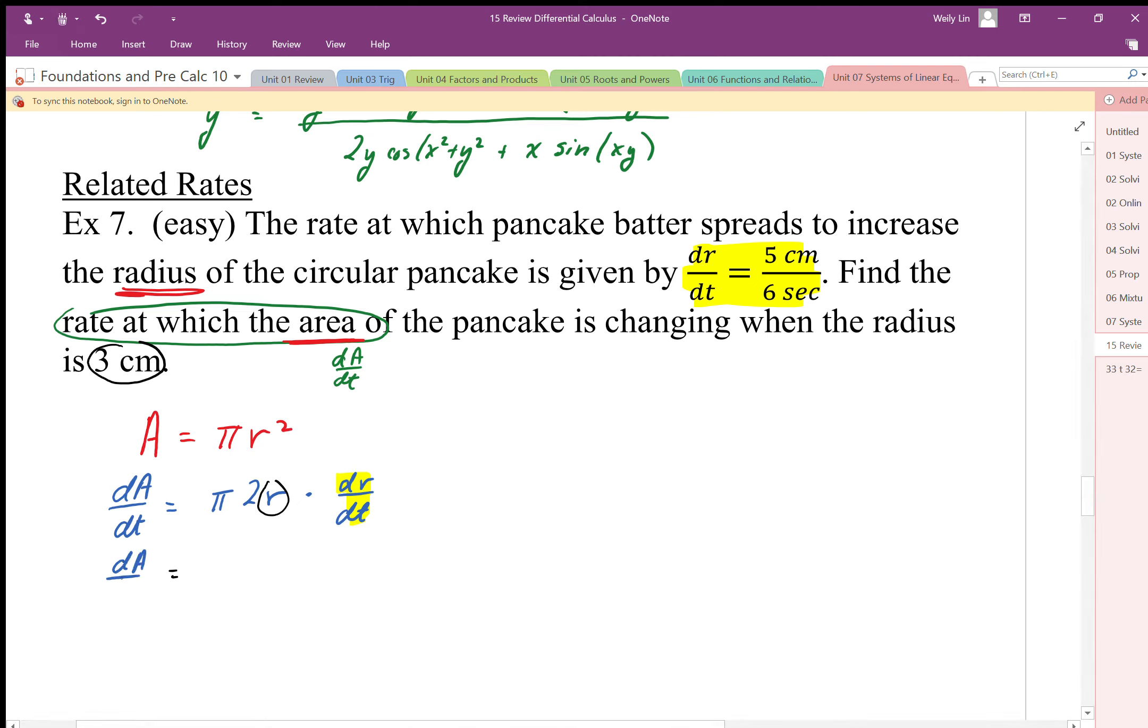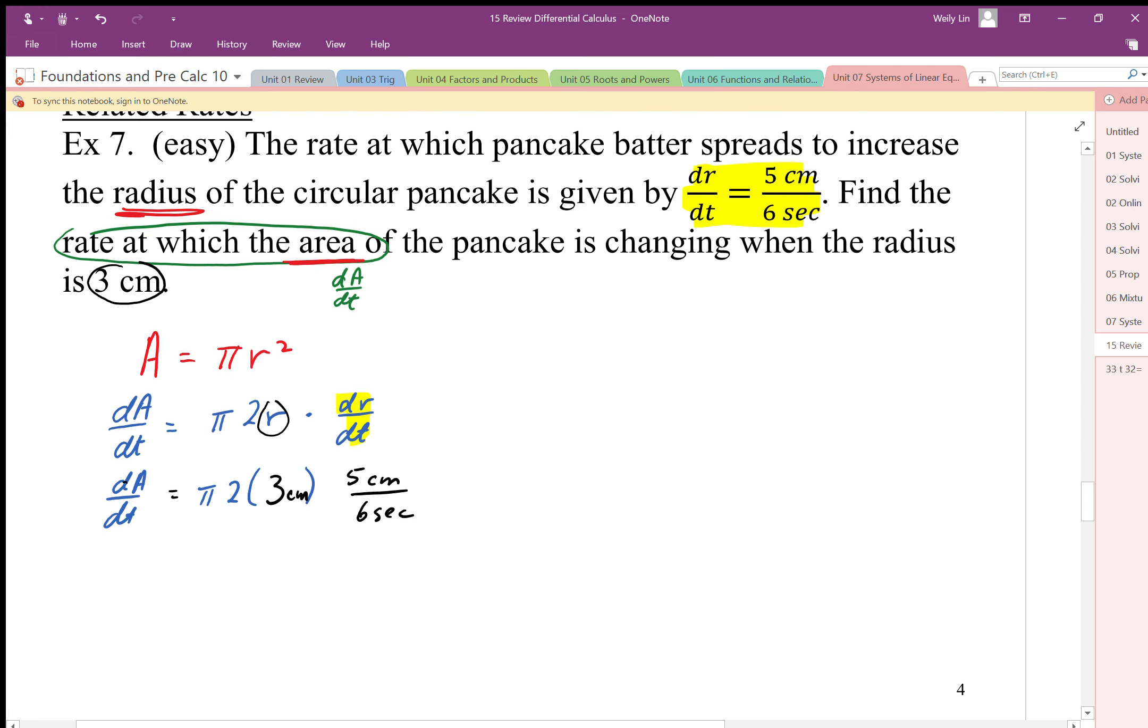dA/dt equals π times 2, the radius is 3 centimeters, and dr/dt is 5 centimeters per 6 seconds. I should put in my units here and I can see that the units will be consistent. There's my substitution and I'm just going to calculate dA/dt.